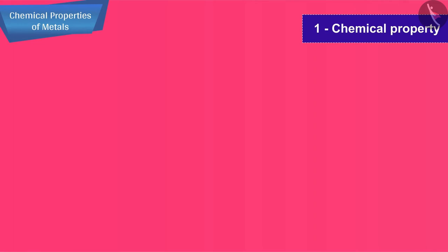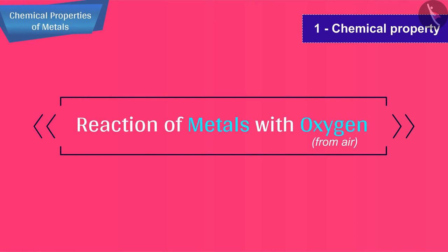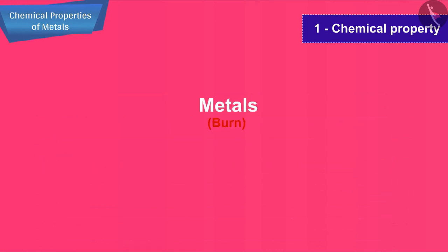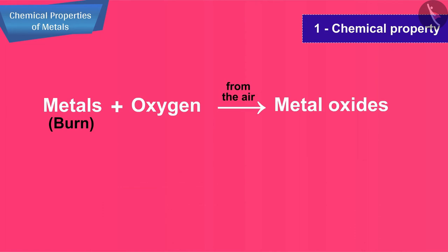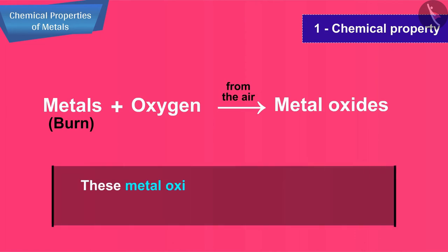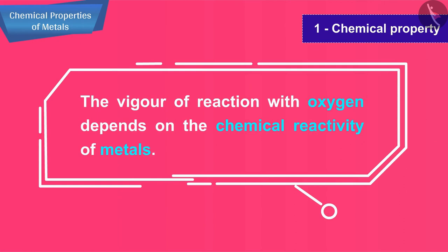The first chemical property of metals that we are going to discuss is the reaction of metals with oxygen from air. When metals are burnt in air, they react with oxygen to form metal oxides. These metal oxides are basic in nature and therefore they will turn red litmus solution blue.